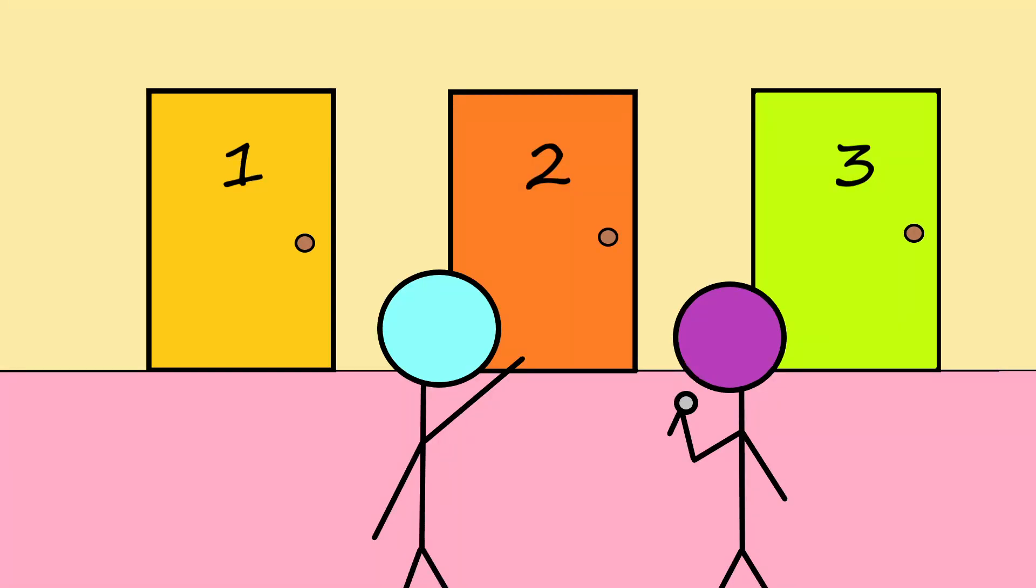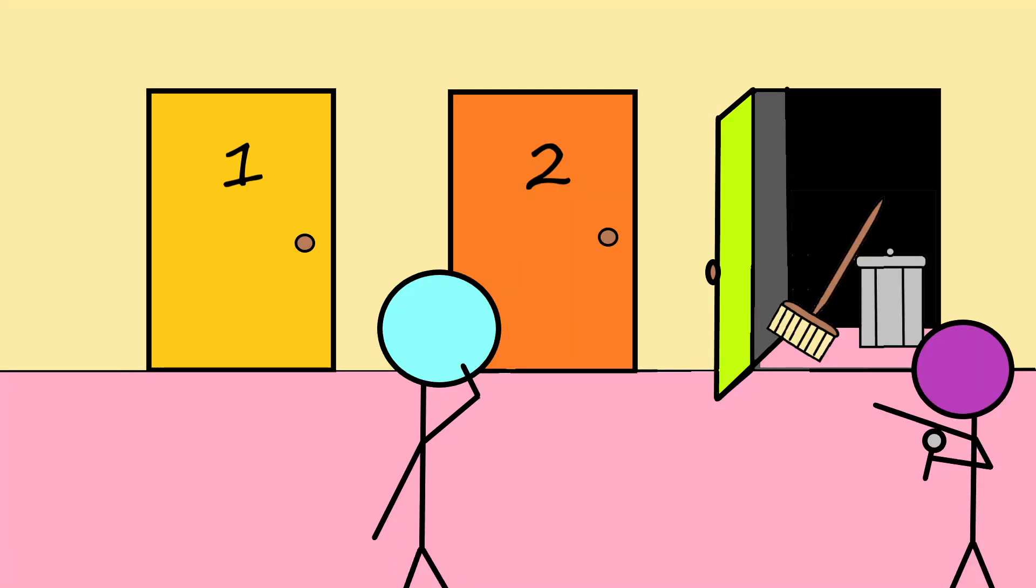But what if the host then opens one of the two doors that you didn't pick and shows that it has junk behind it? Then they give you the option to switch your choice to the remaining door. Should you?